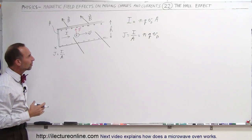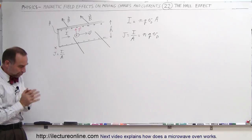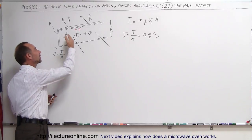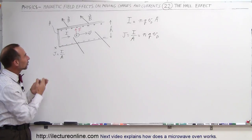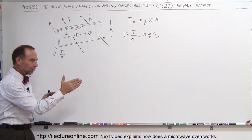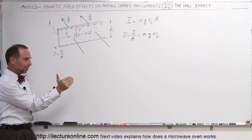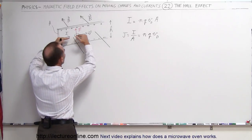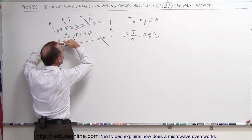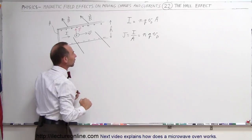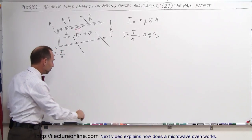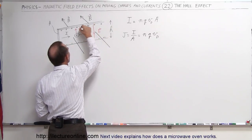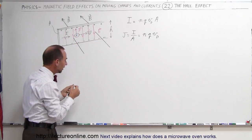What forces are present here? If there's a magnetic field situated perpendicular to the conductor and there are positive charges moving to the right, we use the right-hand rule. With the magnetic field going into the board, the force experienced is upward. So positive charges tend to drift towards the top of the conductor, and therefore there would be an excess of negative charge at the bottom — a separation of charge. That separation sets up an electric field from top to bottom through the conductor.